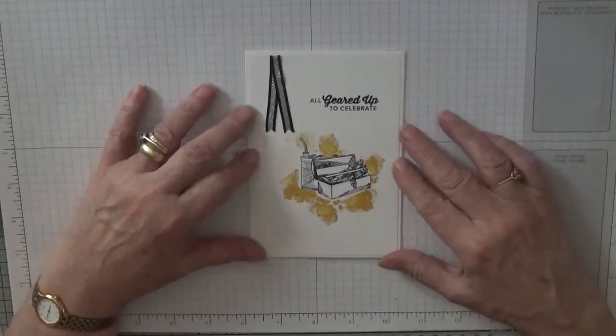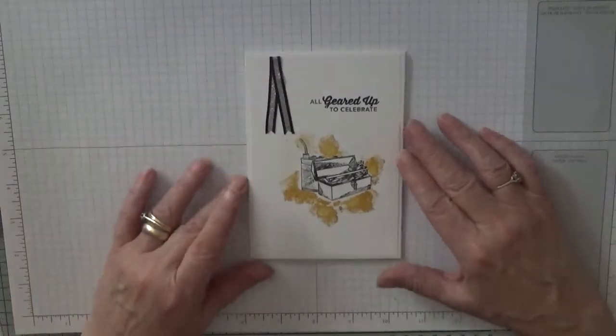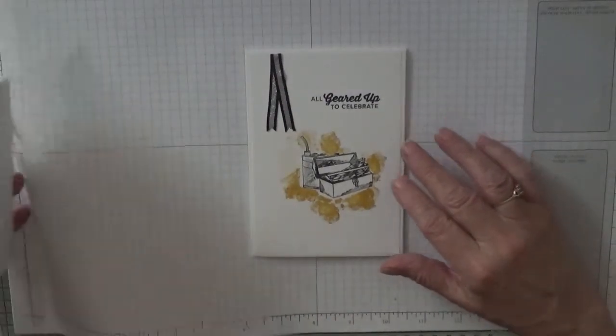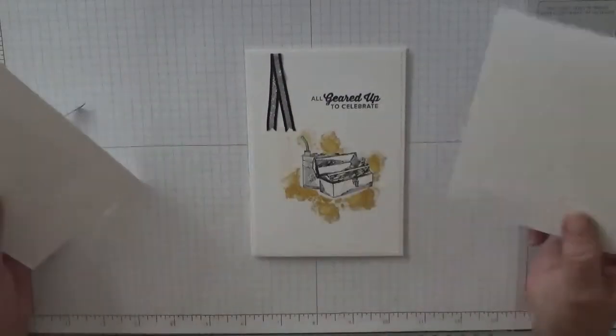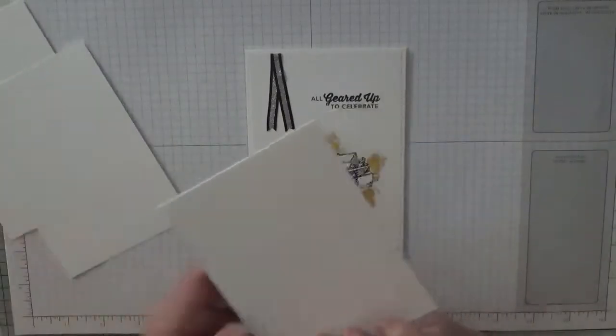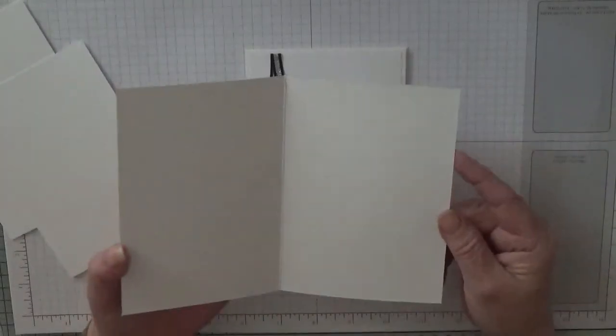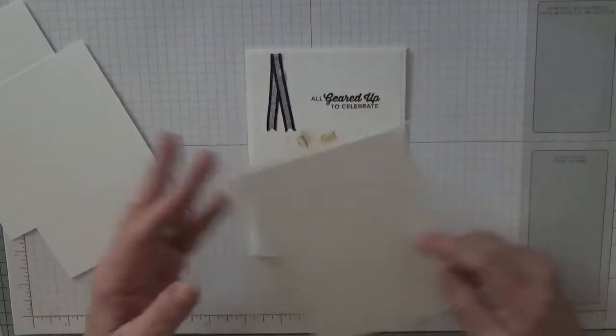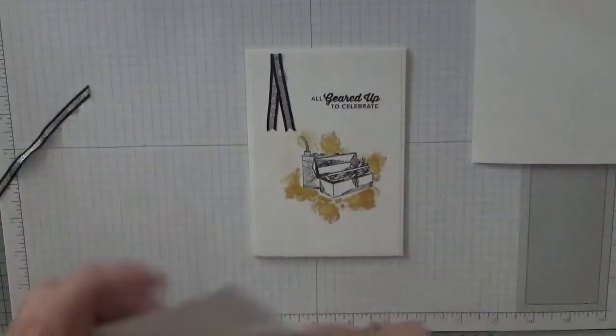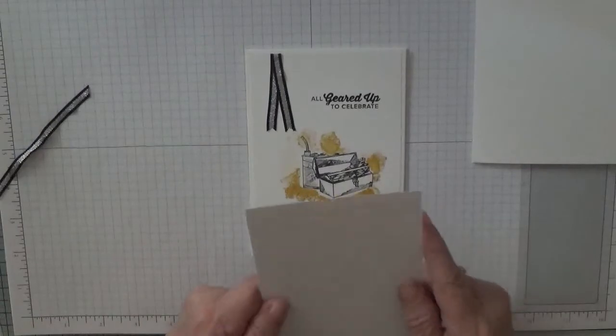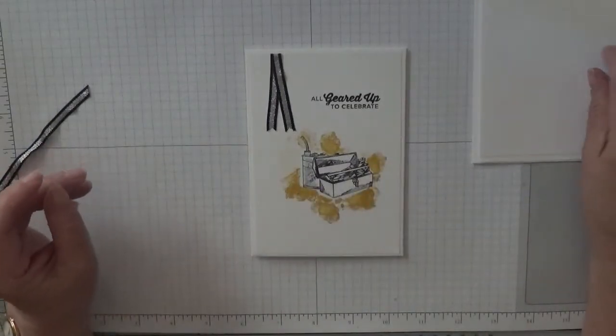A quick and easy male birthday card to make. To make this card I used a card base of 8 1⁄4 x 5 7⁄8, scored at 4 1⁄8 and 4 1⁄2, and two pieces of white card stock at 5 5⁄8 x 3 7⁄8.